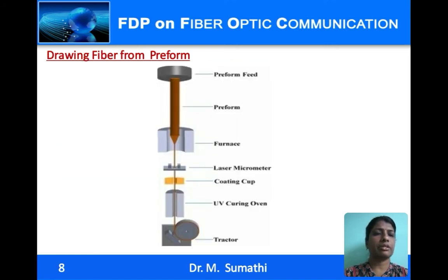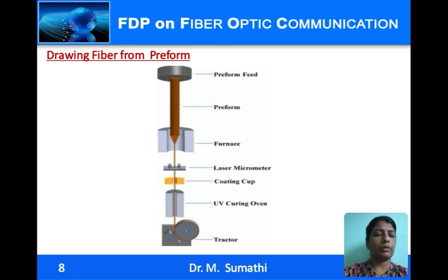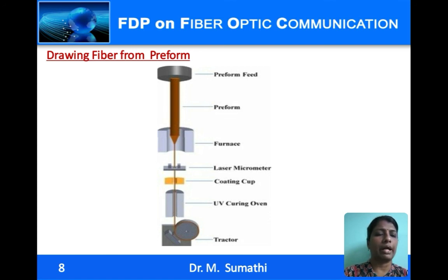This setup shows how the fiber is drawn from the preform. The preform manufactured in the previous steps is fixed at one end, and the other end is heated by a furnace, causing the tip to soften. A fiber is then drawn, and the rotation speed of the tractor drum determines the diameter of the fiber. The drum must rotate at constant speed to maintain uniform diameter. The fiber diameter is measured and a closed-loop method is used to monitor and maintain it at a constant value. As soon as the fiber is drawn, it is coated with an elastic material to protect it from environmental pollution such as water vapors and dust.